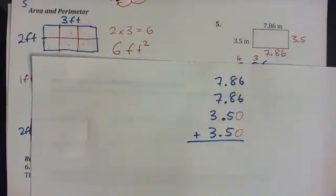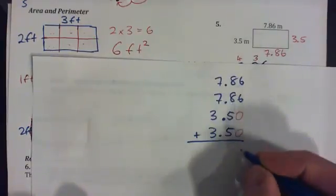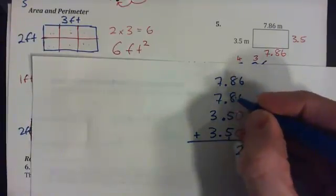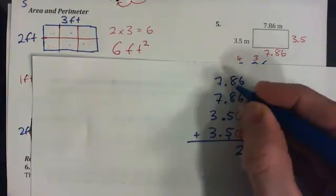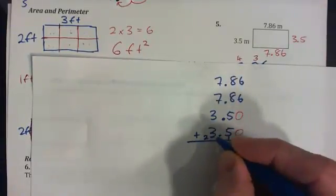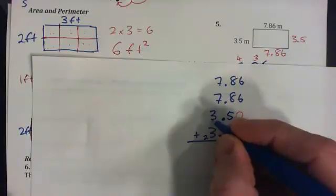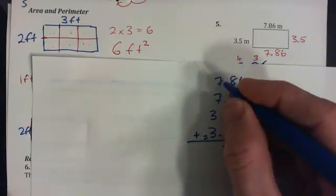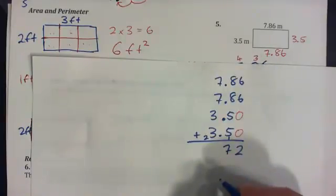Now, if I add these up, 6 and 6 is 12, put down 2, carry the 1. 5 and 5 is 10, and 1 is 11, and 8 is 19, and 8 is 27, and carry 2. 2 and 3 is 5, and 3 is 8, and 7, 15, and 7, 22.